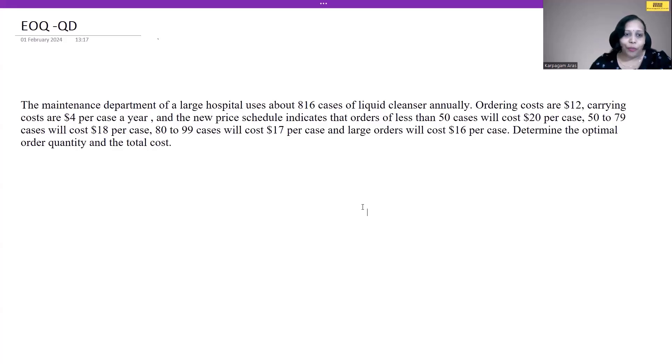Now let's solve a specific problem. Economic Order Quantity with Quantity Discount model is used when you are given a range and accordingly a price point. In this specific problem, we have a large hospital which has a maintenance department. This maintenance department uses liquid cleanser annually—816 cases. For every order that we place, there is ordering cost and carrying cost. In this case, the ordering cost is $12 and the carrying cost is $4 per dollar.